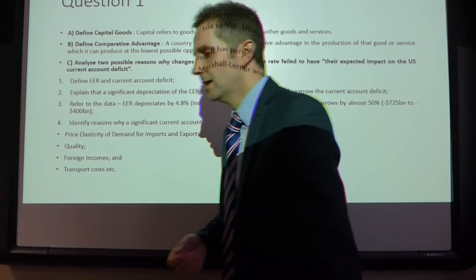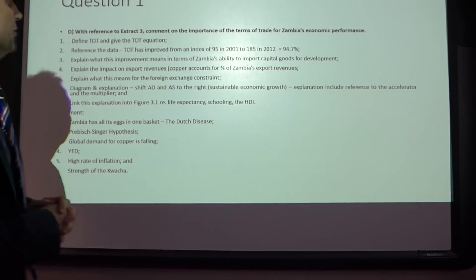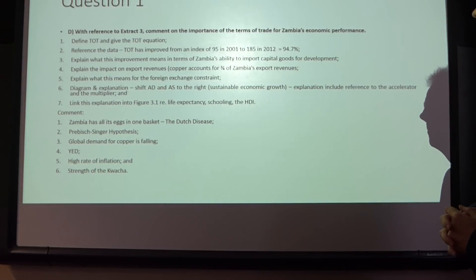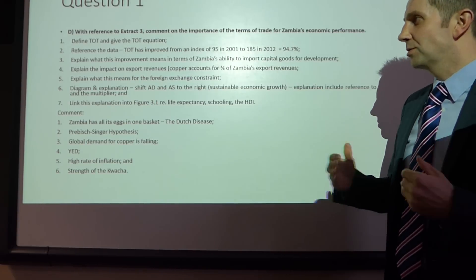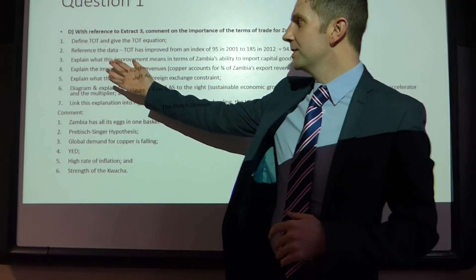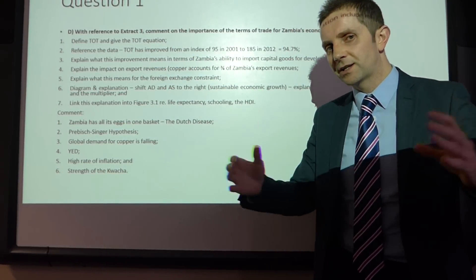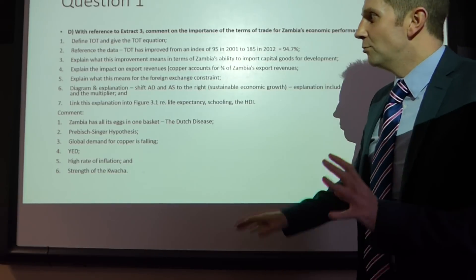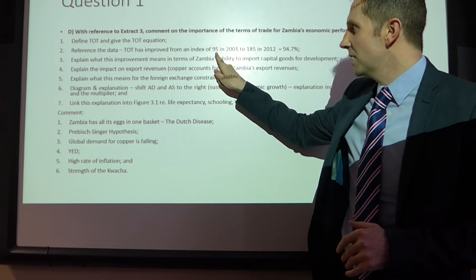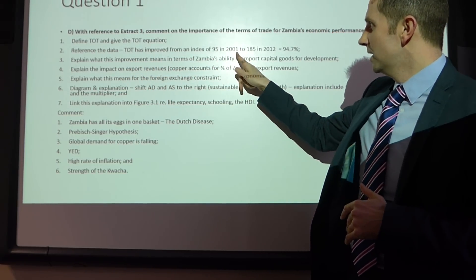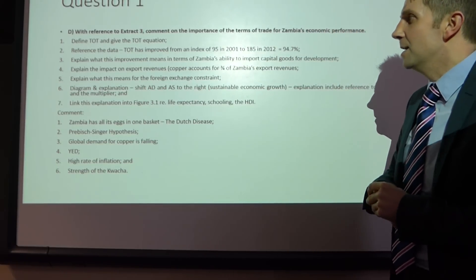That covers question 1C. For 1D: with reference to Extract 3, comment on the importance of the terms of trade for Zambia's economic performance. Structure it the same way — define the terms of trade and give the equation: index of export prices over index of import prices times 100. Reference your data: the terms of trade improved from an index of approximately 95 in 2001 to 185 in 2012, which is a 94.7% improvement.